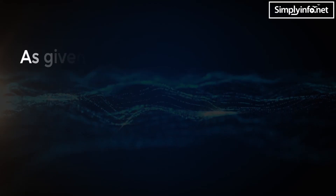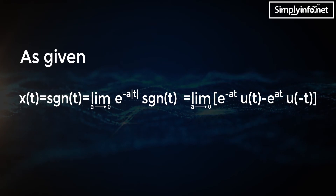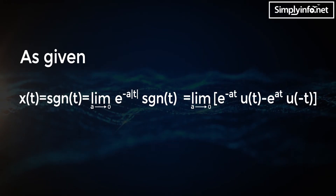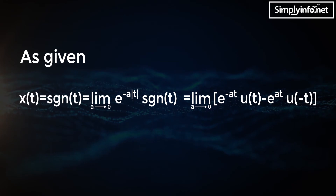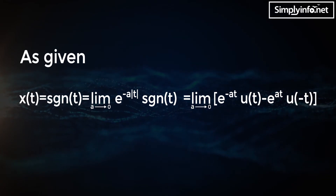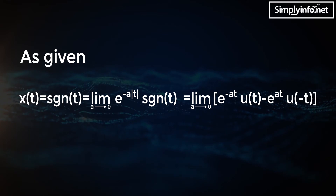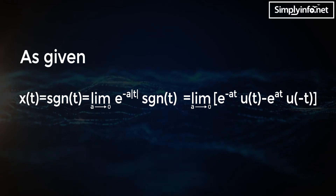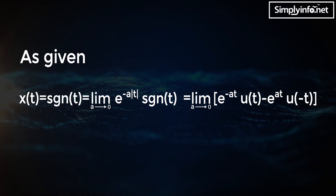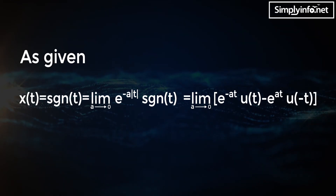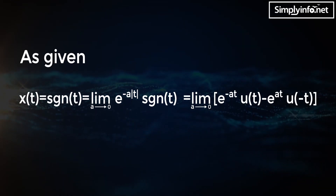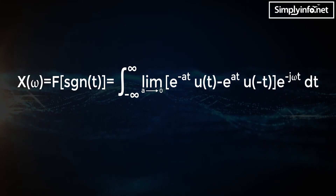As given, x(t) equals sgn(t) equals the limit as a approaches zero of e^{-a|t|} · sgn(t), which equals the limit as a approaches zero of e^{-at} · u(t) minus e^{at} · u(-t). Therefore, X(ω) equals the Fourier transform of sgn(t).